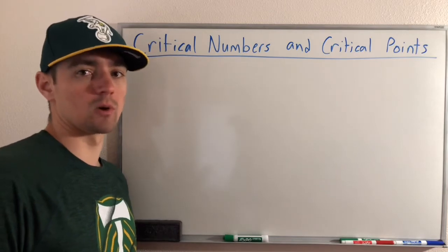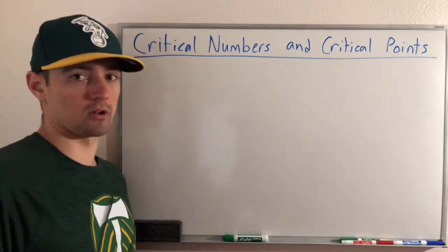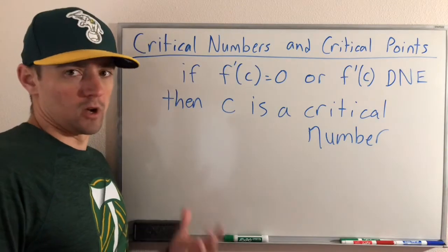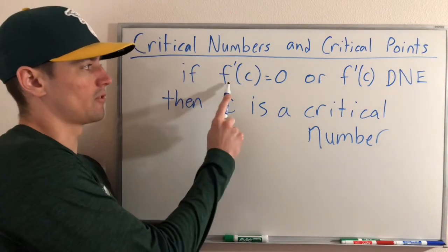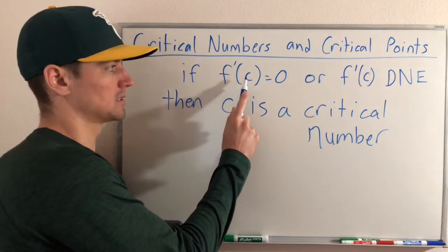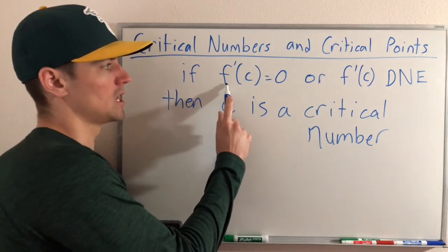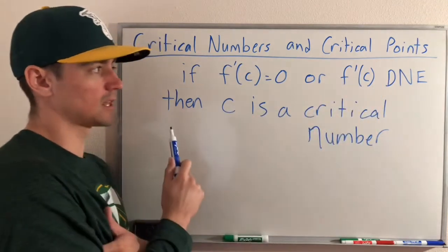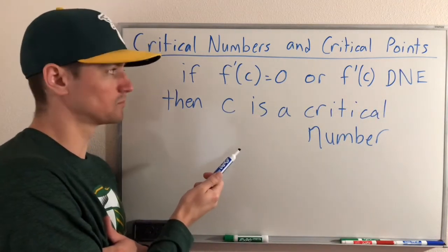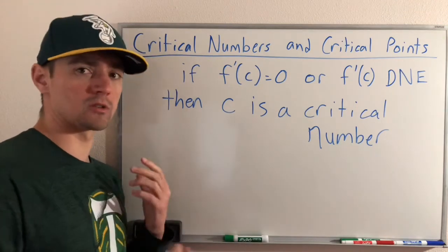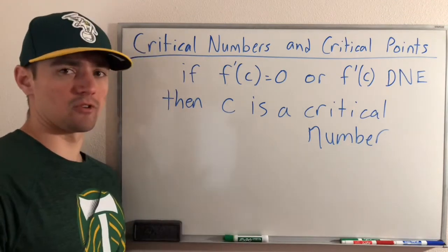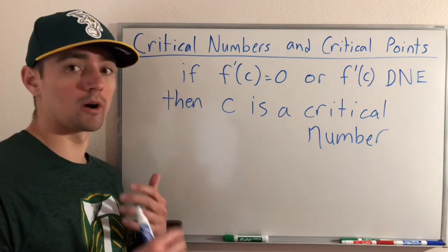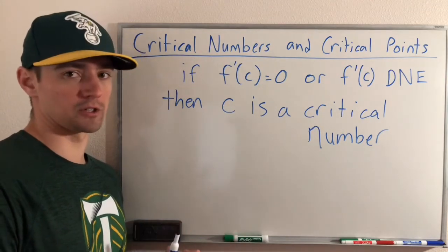Before we get into those examples, I want to mention what a critical number actually is. If you take the derivative of your function and plug in c into the derivative, and it either gives you zero or the derivative does not exist at that point, then that c value is a critical number. To find critical numbers, all you really have to do is take your function and figure out where the derivative equals zero — in other words, where the slope of the function is zero.